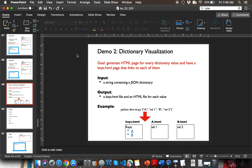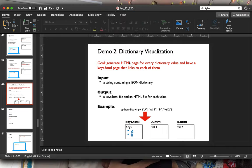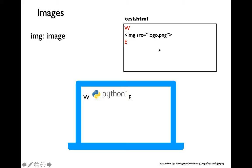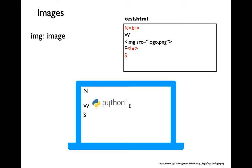The next tag I want to introduce is for images. You can insert images into HTML pages using the image tag, which has an attribute called 'src' — a path to the image you're trying to insert. You can insert an image in between text content just by adding the image tag. The image tag is a self-closing tag with no closing tag. If you want the image on a new line, you need to explicitly add a line break.